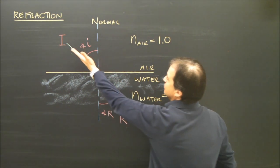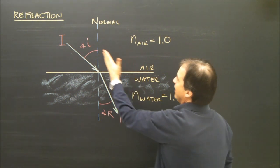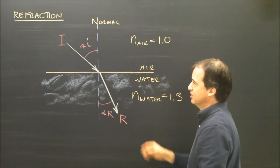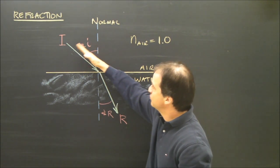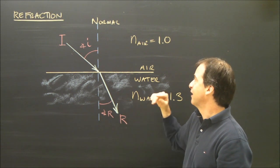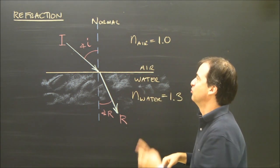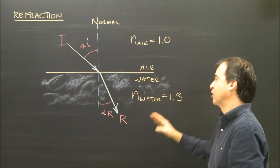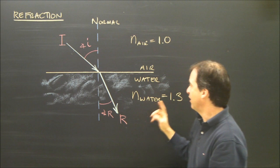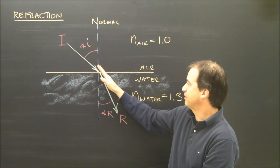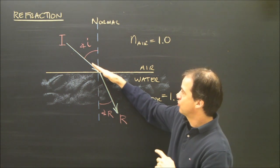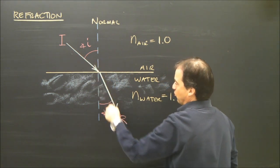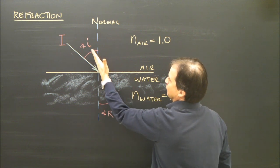The incident ray refracts towards the normal. So for any angle — if I shine it at 30 degrees, it will be less than 30 degrees in this material. If I shine it at 70 degrees to the normal, this will be somewhat less than 70 degrees. That's because it's going from what we call less dense to more dense. When a light ray travels from less dense to more dense, it refracts towards the normal. It does the opposite when going from more dense to less dense — if I shine a laser beam in the water up at the surface, when it goes out into the air, it speeds up and refracts away from the normal.